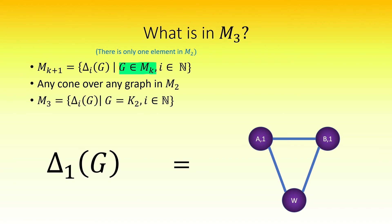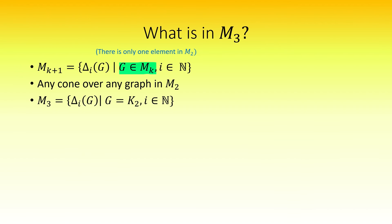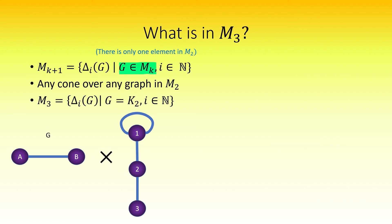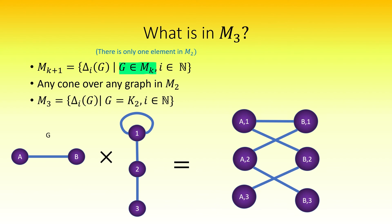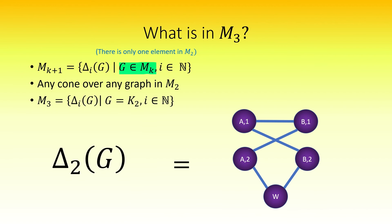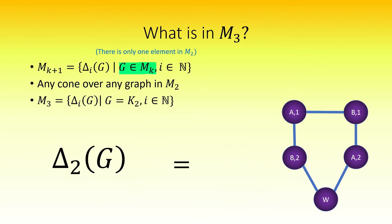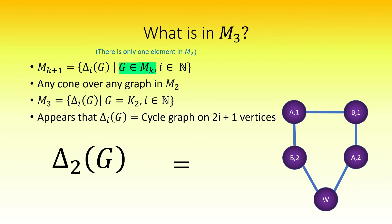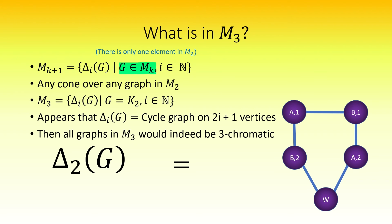Next, let's find delta sub 2 of g. Take the tensor product of g with the looped path graph on three vertices, then merge the non-loop associated vertices. Just by rearranging, we see this is a cycle graph with five vertices. A pattern seems to be emerging: it seems that delta sub i of g is the cycle graph with 2i plus 1 vertices. If this is the case, then the chromatic number of all graphs in m sub 3 would indeed be 3, as stated earlier.